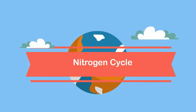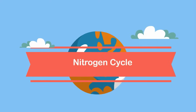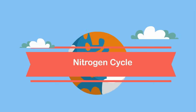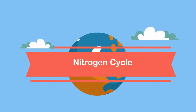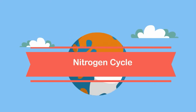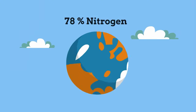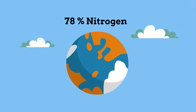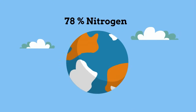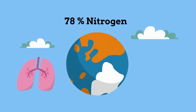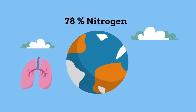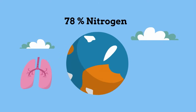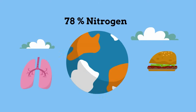Welcome to Moo Moo Math and Science. In this video I would like to talk about the nitrogen cycle. Our atmosphere is made up of 78% nitrogen. We need nitrogen for our DNA and for proteins, but we just can't breathe in nitrogen like oxygen — we must absorb our nitrogen in our food.